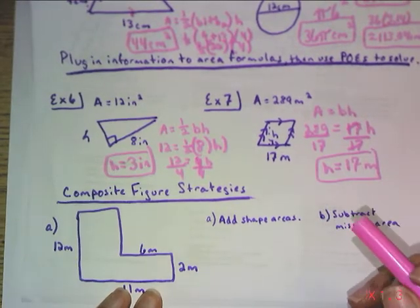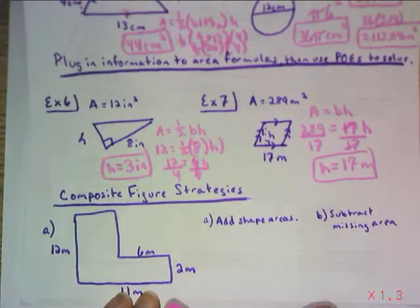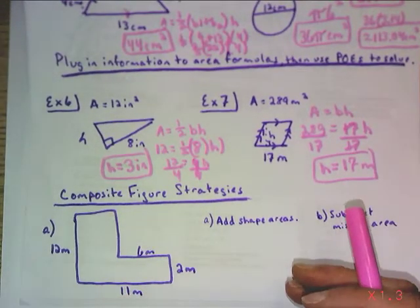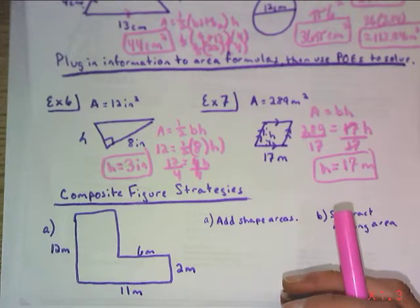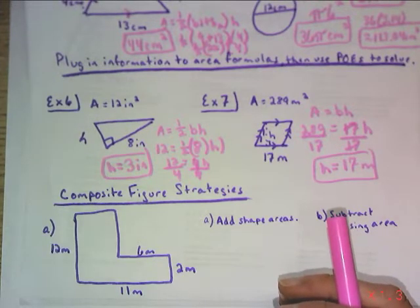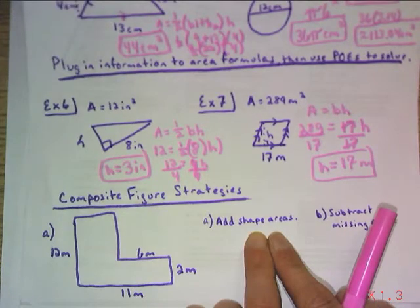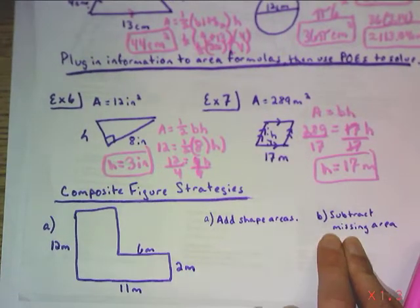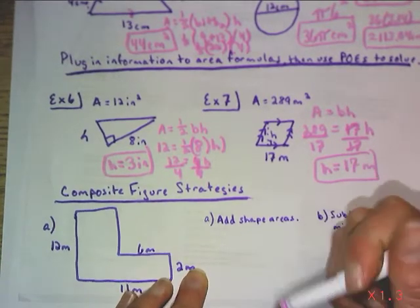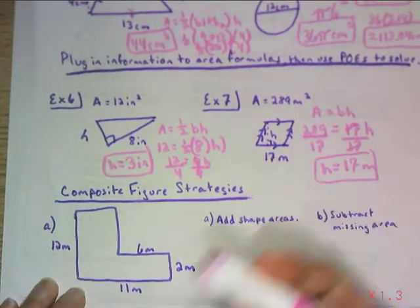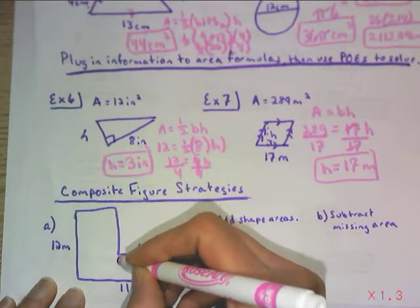Okay, and then the final bit of review that we're going to cover is when you have a composite figure, the various strategies that you can use for area. So if you look at this thing, it's not a formula that we have on our chart, so you can either add the shapes that you know together, or alternatively you can subtract the piece that's missing away from the larger. So with the first example, if I'm going to add the shapes, I think, what is it composed of?